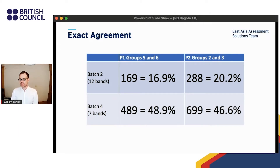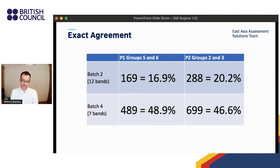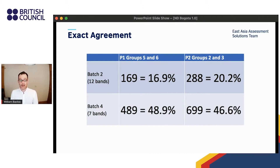In terms of guidance from the literature, Knoch, Fairbairn, and Jin explain that although many textbooks set the acceptable level of exact agreement at 80 percent, in reality levels usually fall between 40 and 60 percent. We can see that the 13-band scale falls well below this, but with so many bands we would expect this number to be lower. For the seven-band scale, the levels of exact agreement are well within the suggested tolerances.